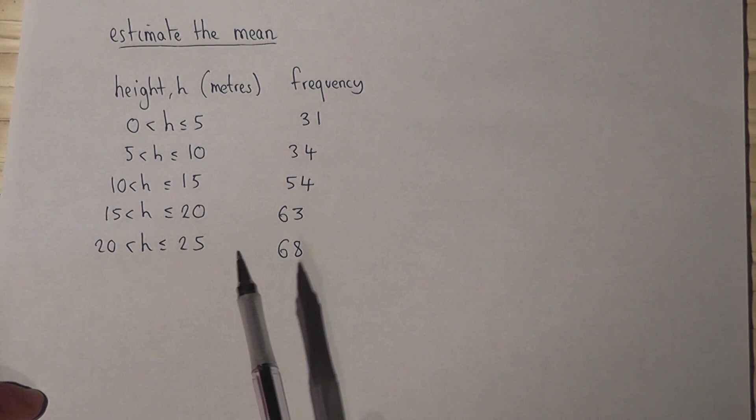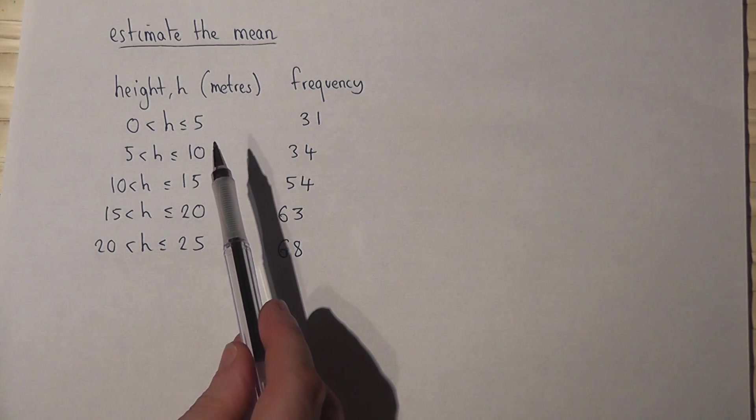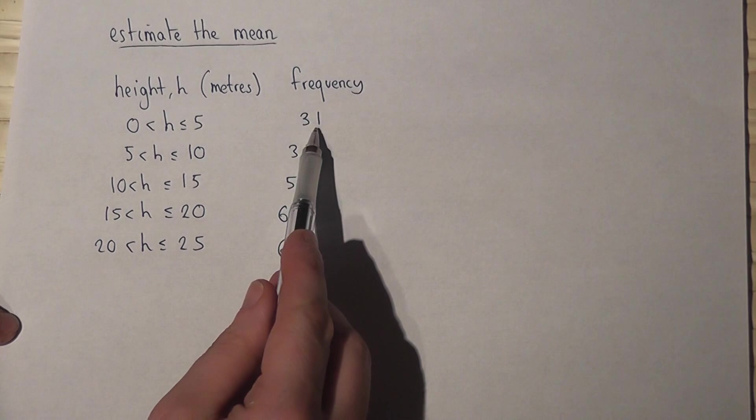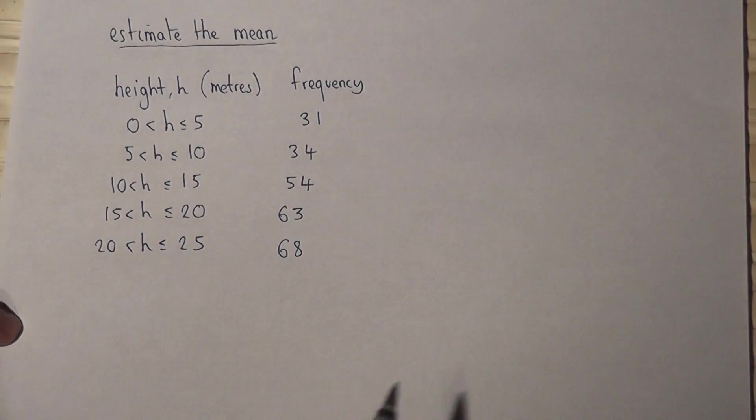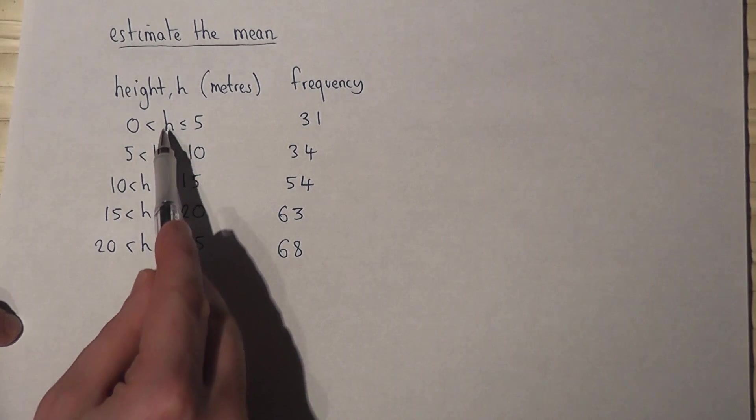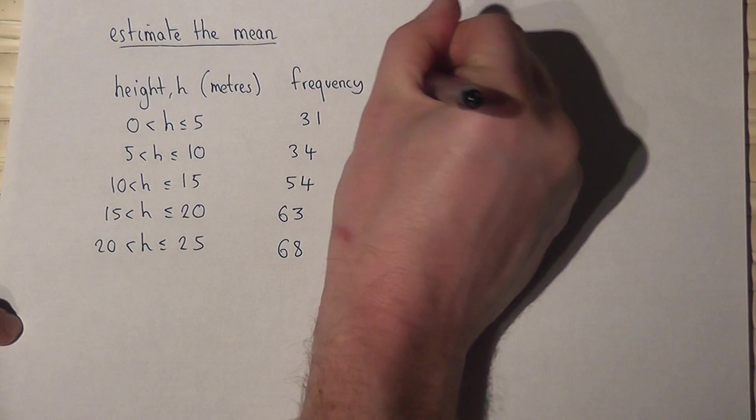In this question we're asked to estimate the mean height of some trees in a wood. We have 31 trees between 0 and 5. To estimate the mean, we have to fix a value for all these classes, and for this we use what's called the midpoint.